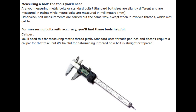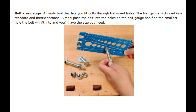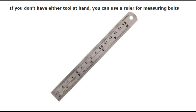Measuring a bolt — the tools you'll need. Are you measuring metric bolts or standard bolts? Standard bolt sizes are measured in inches, while metric bolts are measured in millimeters. Otherwise, bolt measurements are carried out the same way, except when it involves threads. For measuring bolts with accuracy, you'll find these tools helpful: a caliper, needed for measuring metric thread pitch — standard uses threads per inch and doesn't require a caliper for that task, but it's helpful for determining if thread on a bolt is straight or tapered. A bolt size gauge is a handy tool that lets you fit bolts through bolt-sized holes. The bolt gauge is divided into standard and metric sections. Simply push the bolt into the holes on the bolt gauge and find the smallest hole the bolt will fit into, and you'll have the size you need. If you don't have either tool at hand, you can use a ruler for measuring bolts.